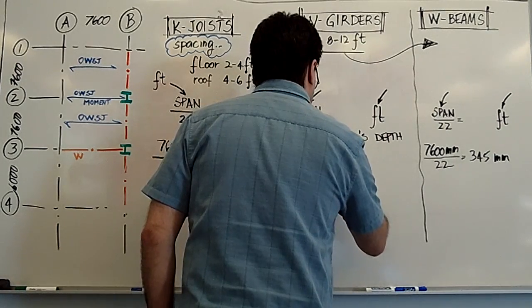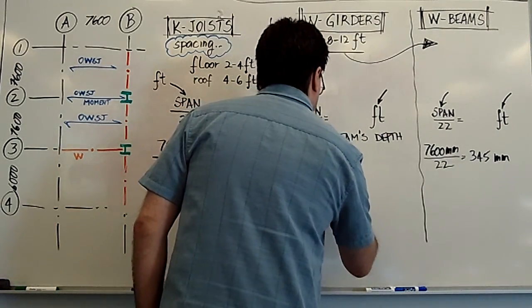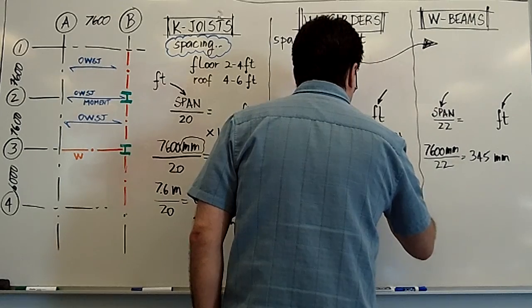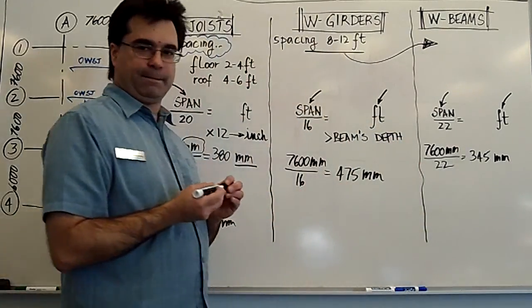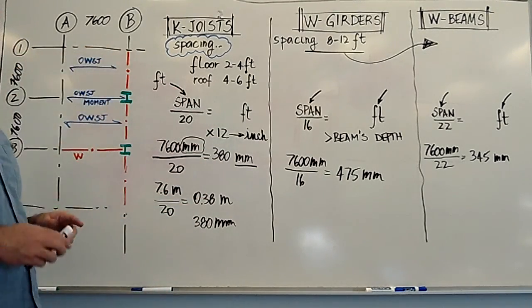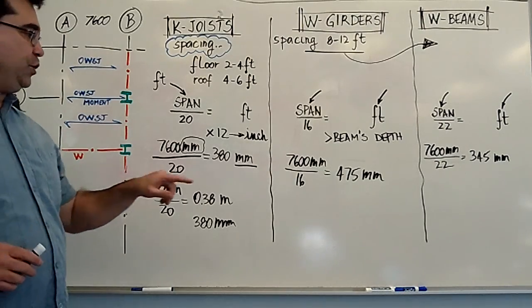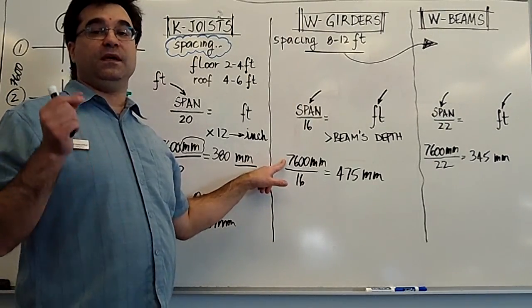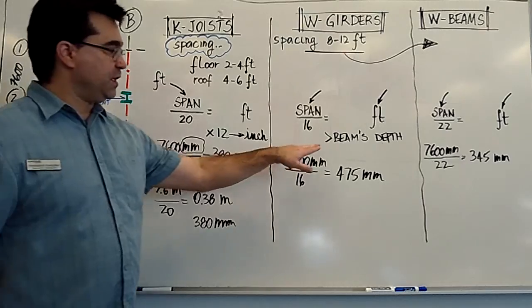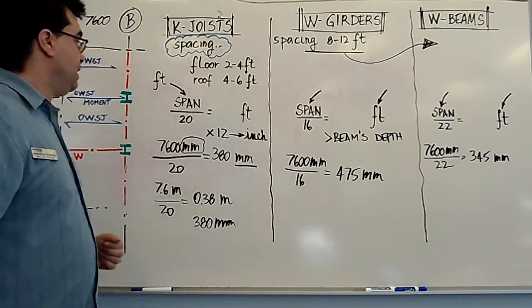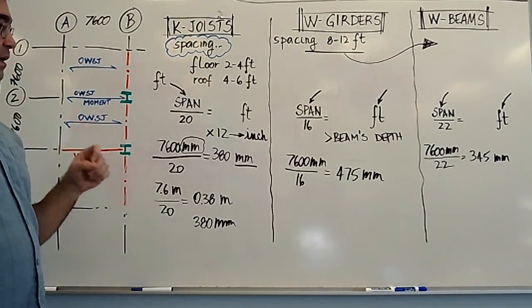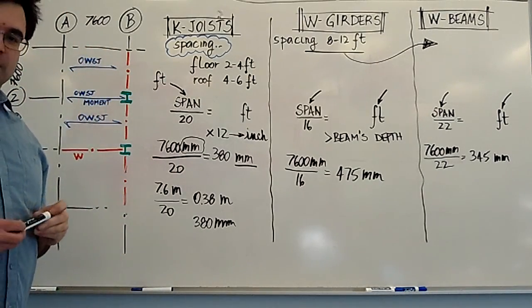I'm going to use millimeters because that's what you're given. 7,600 millimeters divided by 16 gives us 475 millimeters. So that's the depth of this girder. Now, here's something important. Your girder must always be deeper than whatever beam it's supporting. That's what I'm trying to say here, greater than a beam's depth. So if these beams, if it has beams going into the girder, not open web steel joists, but beams, this girder must always be deeper than those beams.